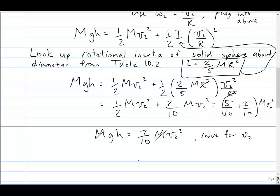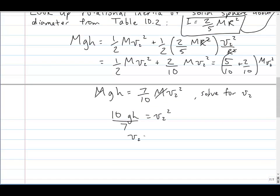So mgh is equal to 7 tenths of mv2 squared. And we can cross out the m's there, solve for v2 squared. It's 10 sevenths gh, and we get v2 is equal to square root of 10 over 7 gh. And remember, if it's just sliding down the hill, you get square root 2 gh. And 10 sevenths is a little less than 2.